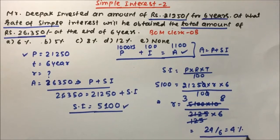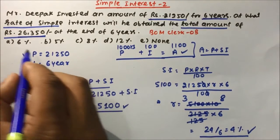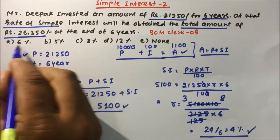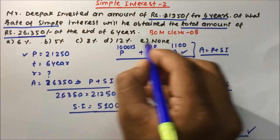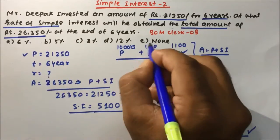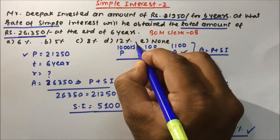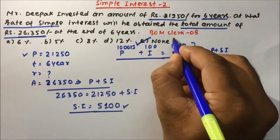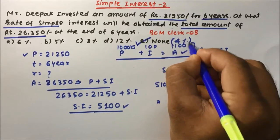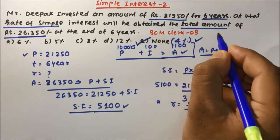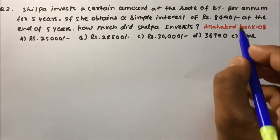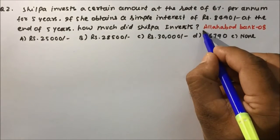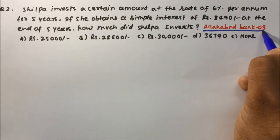So the rate of simple interest is 4%. Looking at options A, B, C, D — 4% is none of the listed options, so option E, 'None of these,' is the correct answer with value 4%. Question number two is also from Allahabad Bank 2008.